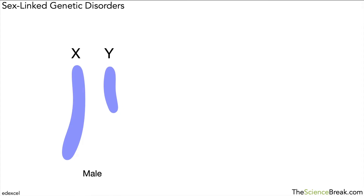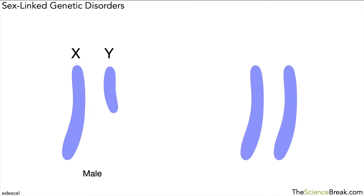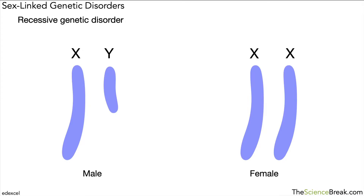Males have one X chromosome and one Y chromosome. Females have two X chromosomes. Now imagine we have a sex-linked genetic disorder — in this example it's a recessive genetic disorder, and it's sex-linked because it's linked to the sex chromosomes.